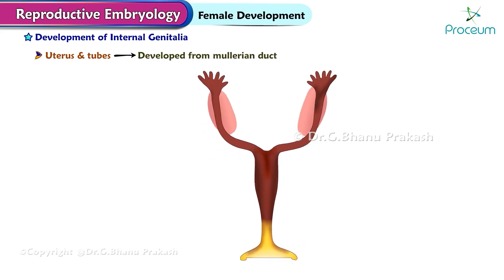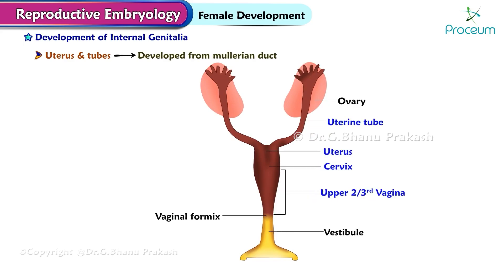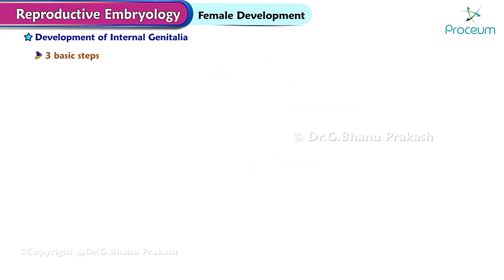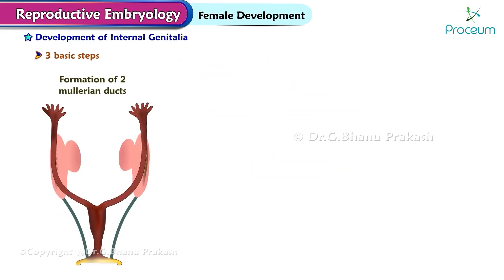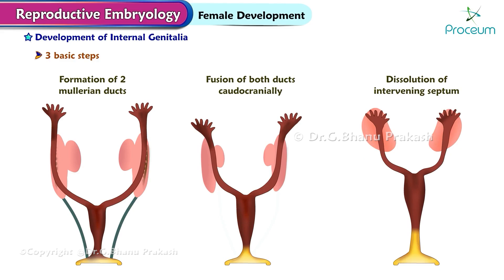Development of internal genitalia: the uterus and tubes are developed from the Müllerian duct. The Müllerian ducts form both the tubes, the whole uterus and cervix, and the upper two-thirds of the vagina. There are three basic steps required: formation of two Müllerian ducts, fusion of both ducts caudocranially, and dissolution of the intervening septum.